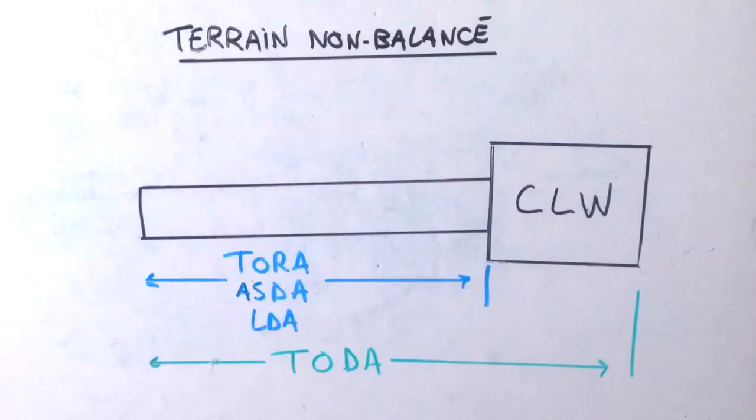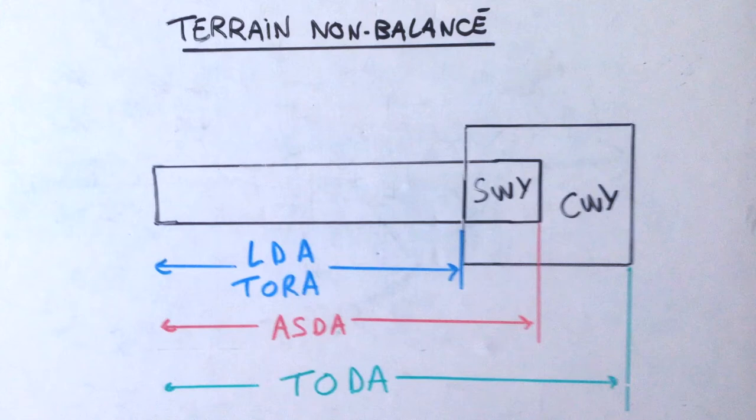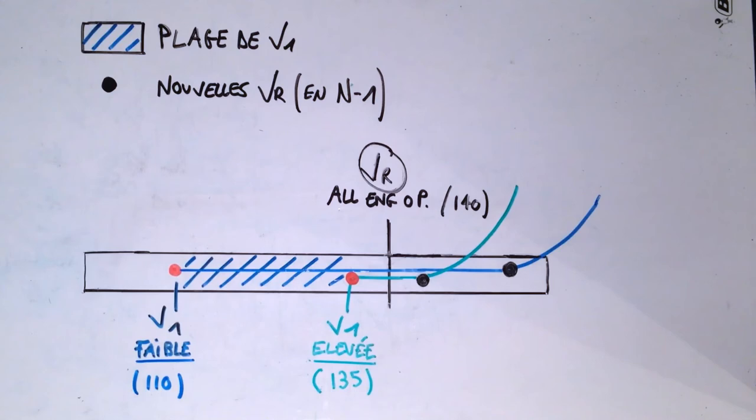So in case terrain non-balanced, what we call terrain non-balanced, it's with a clearway or with a stopway, where the two distances, the TODA, the ASDA and the TORA are not equal. So we will not be able to choose a V1 equilibrant to have a TODR and ASDR of the same distance. So this time we will be able to play between V1. The most small V1 possible will be the VMCG, and the V1 highest possible will be the speed of rotation of the airplane.